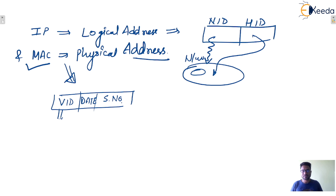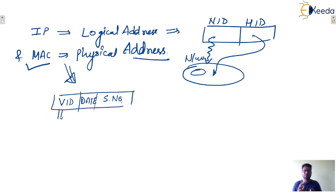So IP is used as a logical address and MAC is used as a physical address. That is the difference between logical and physical addressing — IP address is used as a logical address and MAC address is used as a physical address.